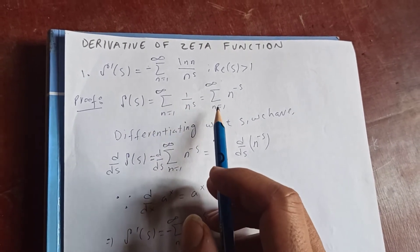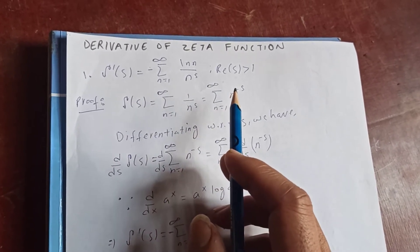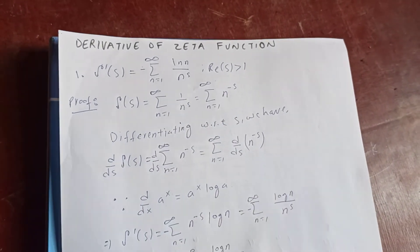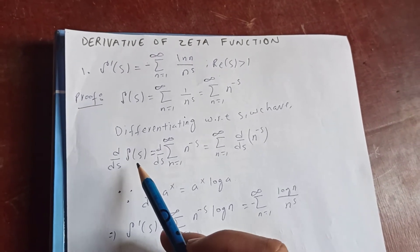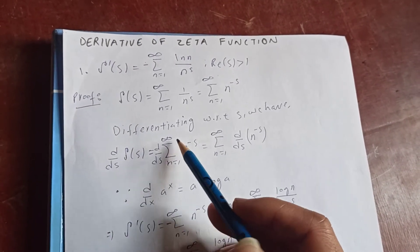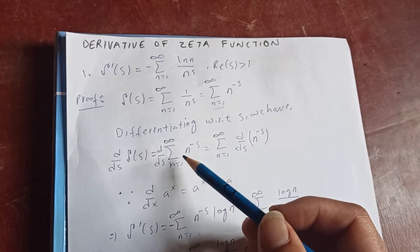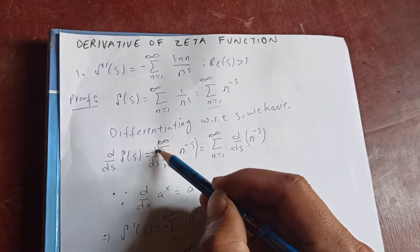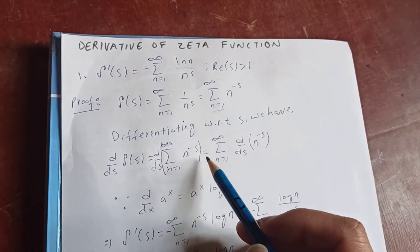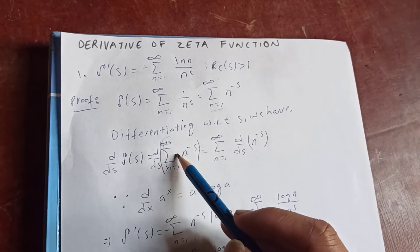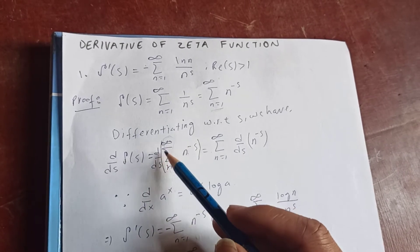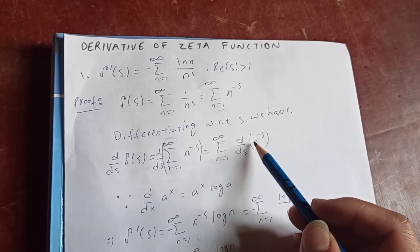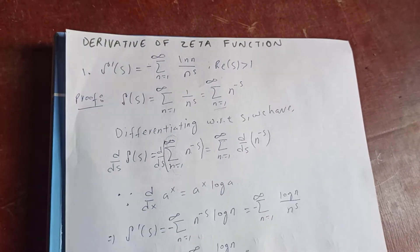We can rewrite this as the sum from n equal to 1 to infinity of n to the negative s. Now, differentiating with respect to s, we have d/ds of zeta(s) equals d/ds of the summation from n equal to 1 to infinity of n to the negative s. Since the summation bounds are constant with respect to s, we bring the derivative inside.